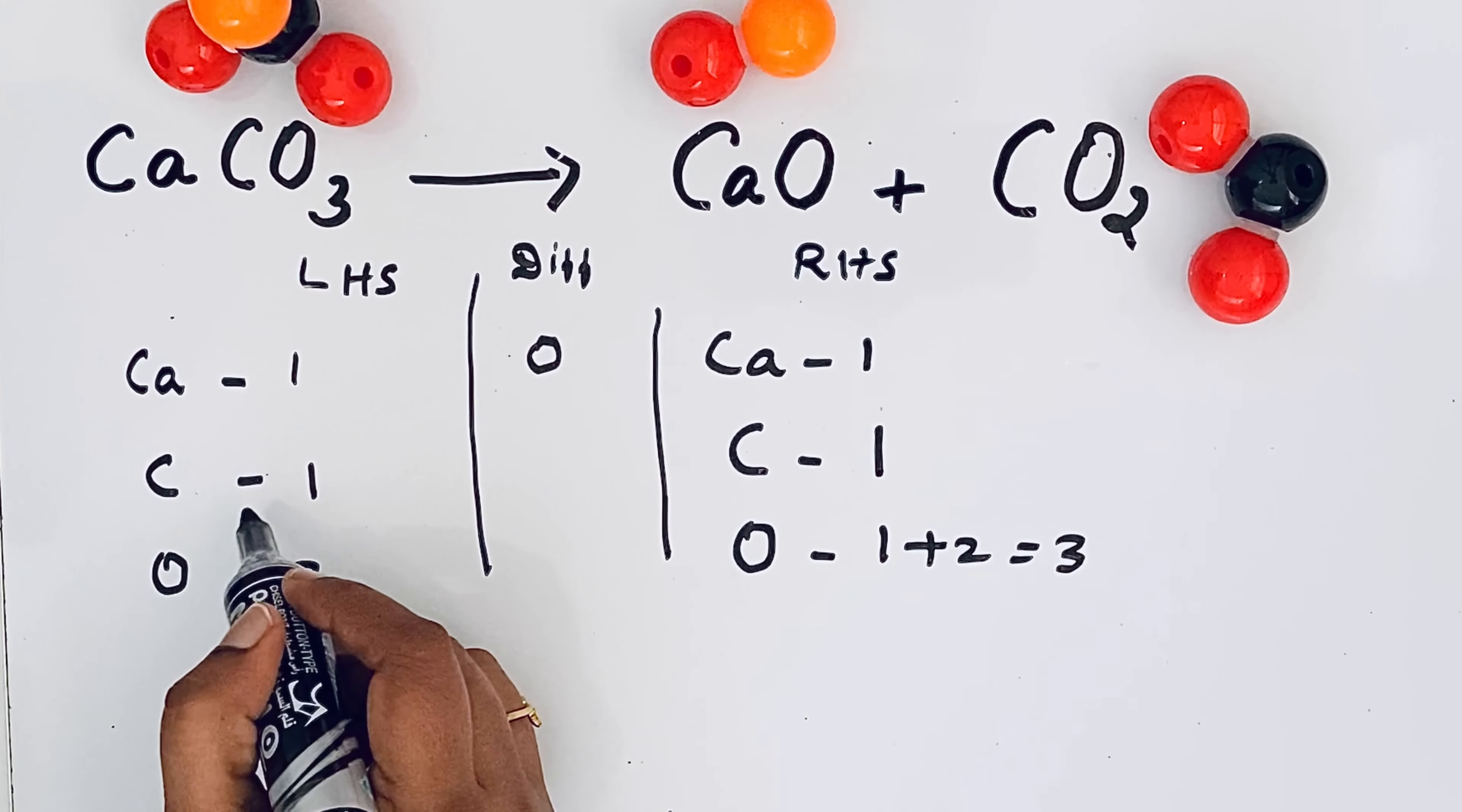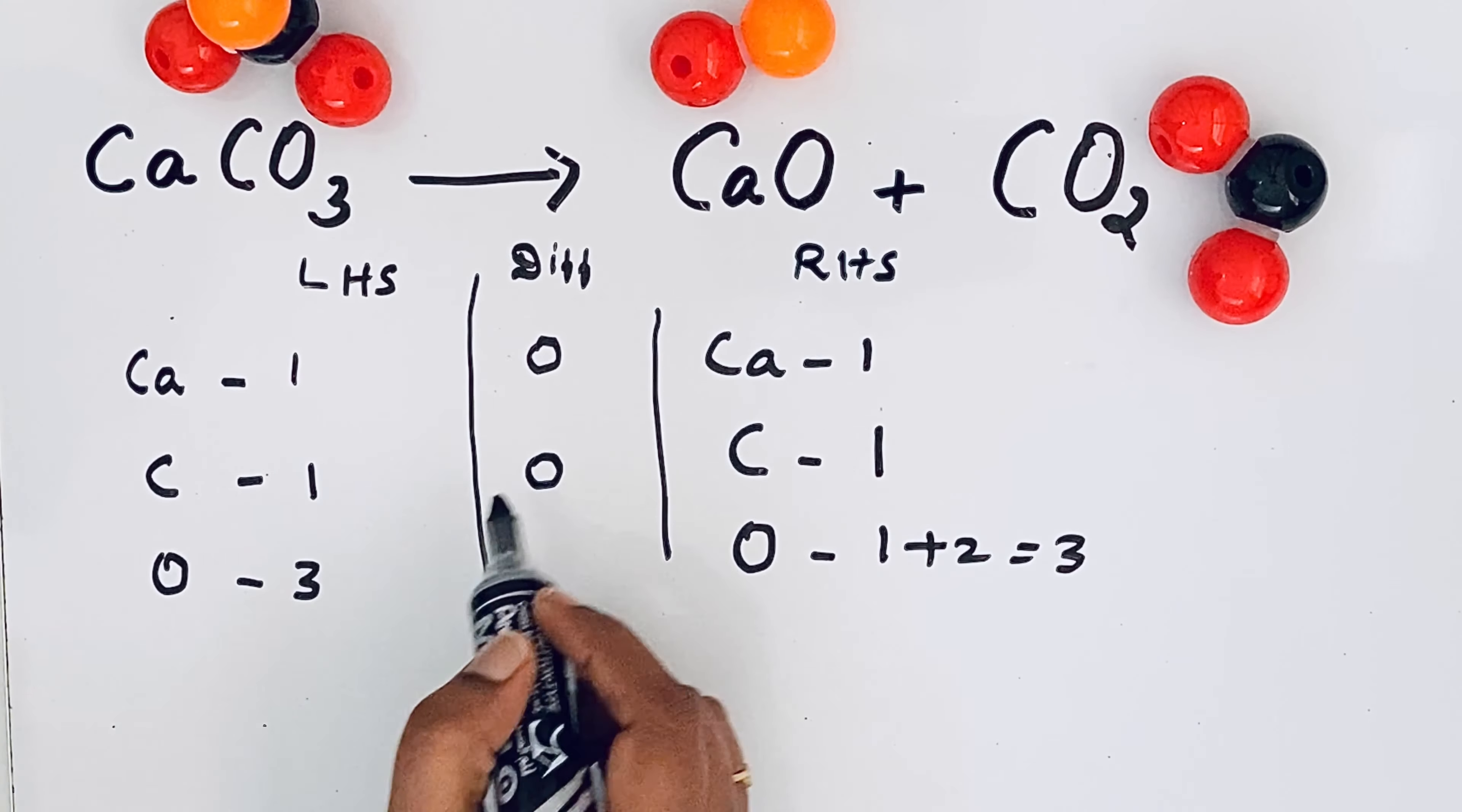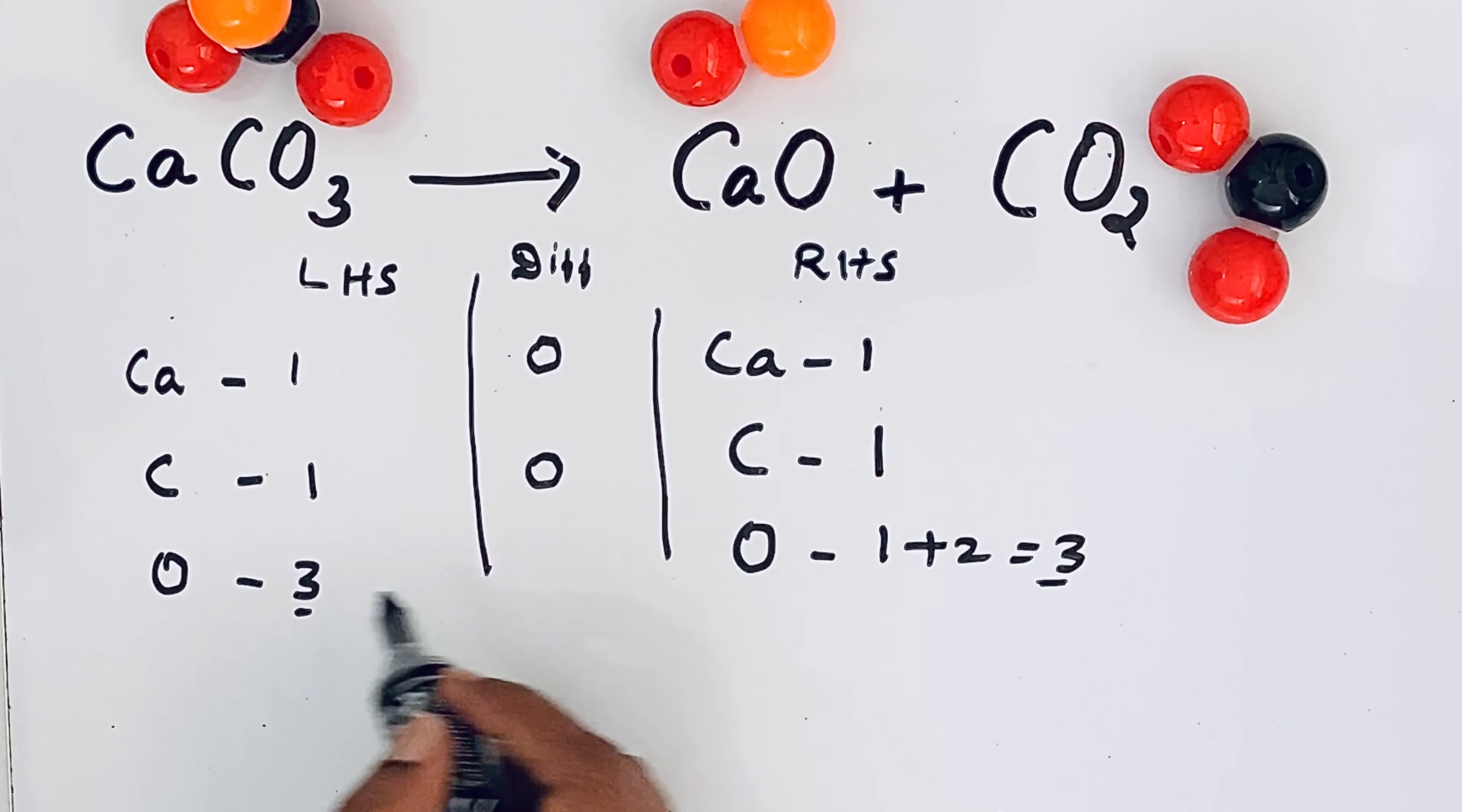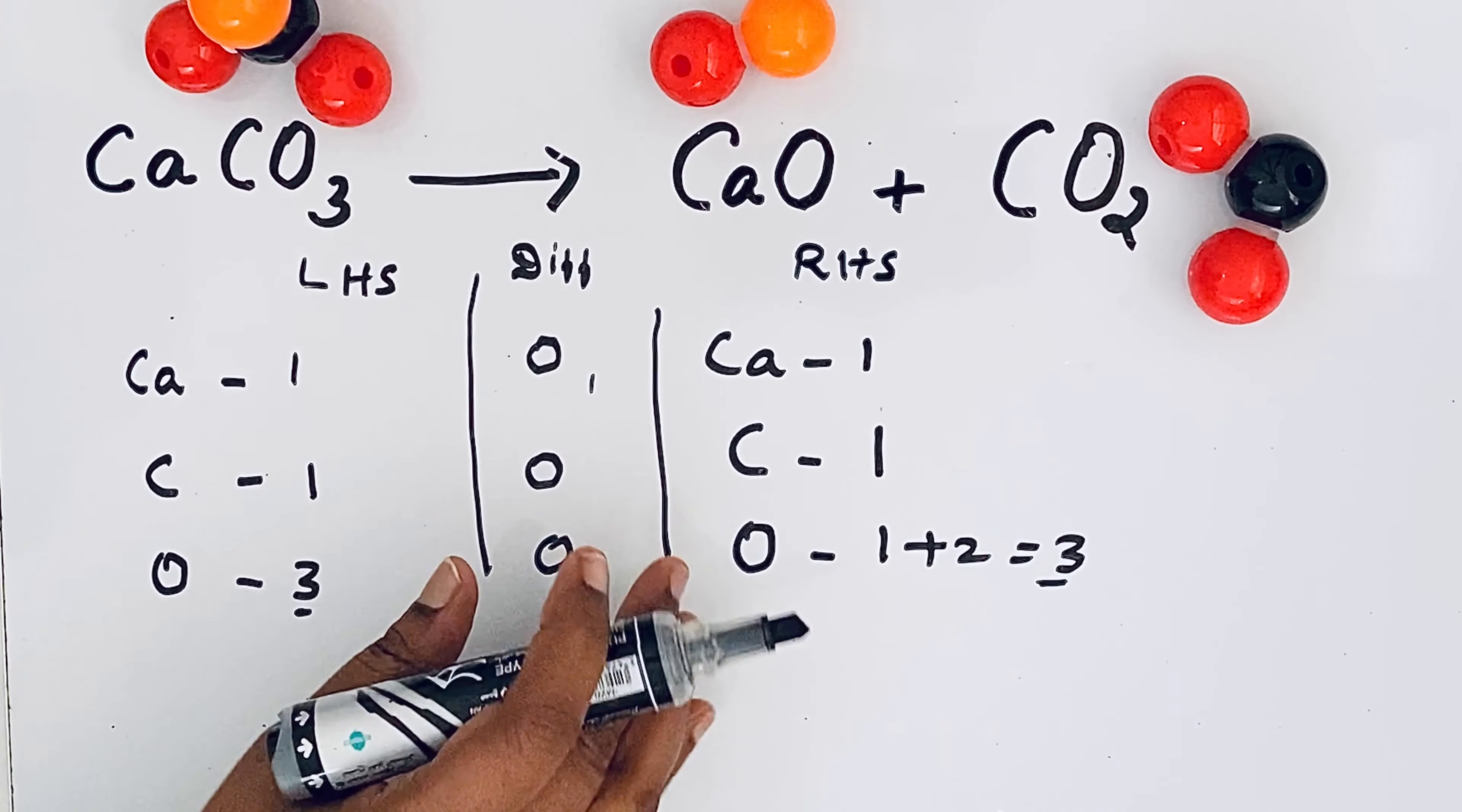Now let us move to carbon. Carbon also one here and in the right hand side one. So one minus one is zero. Then oxygen here three. In the right hand side total oxygen atoms three. So three minus three is zero. It means we got zero for all the atoms. That means it is completely balanced.